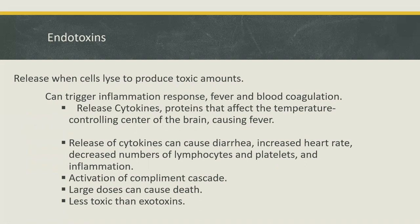Cytokines released as a result of endotoxin exposure can also cause diarrhea, increased heart rate, rapid decrease in the number of lymphocytes and platelets, and generalized inflammation. Other physiological consequences of endotoxin exposure include activation of the complement cascade, which also triggers inflammation, and activation of blood coagulation, which can lead to blood clots and reduced blood flow.